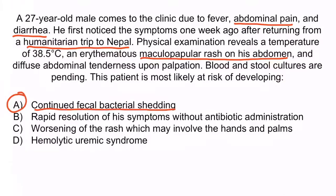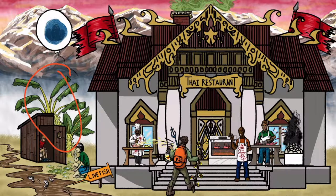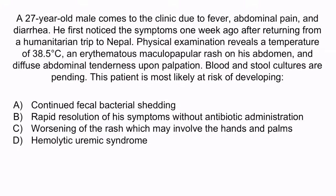The banana trees in the image help you remember that when a patient becomes infected with Salmonella Typhi, they may enter a chronic carrier state where the bacteria colonize the gallbladder. If this happens, the bacteria can proliferate and continue to be excreted in the stool — so there is continued fecal bacterial shedding. B is incorrect because it alludes to non-typhoidal species such as Salmonella enterica, which is generally self-limited; typhoid fever should be treated with antibiotics. C is incorrect because the rash typically lasts 10 to 14 days and is distributed on the chest, back, and abdomen, not the hands and palms. D is incorrect because hemolytic uremic syndrome is associated with Shigella and enterohemorrhagic E. coli. The correct answer is A: continued fecal bacterial shedding.